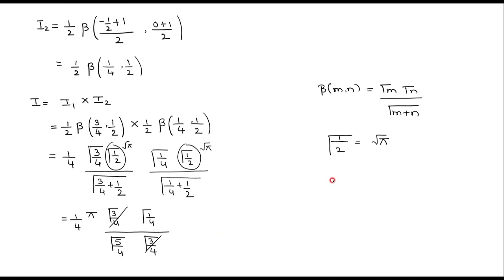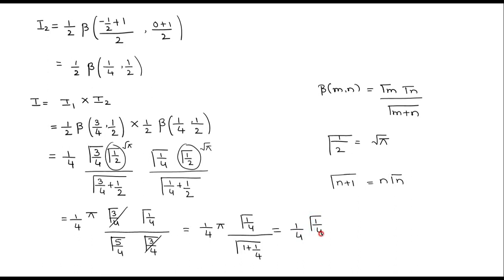Using the result gamma(n+1) = n*gamma(n), gamma(5/4) can be written as 1/4 times gamma(1/4). The gamma(1/4) terms cancel, and the 1/4 factors cancel, leaving us with I1 times I2 equal to pi. Therefore, the given integral value I equals pi.